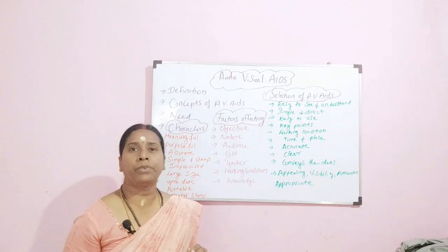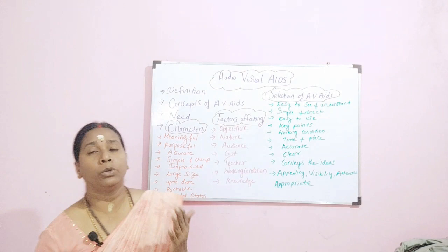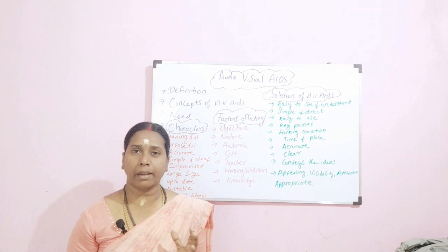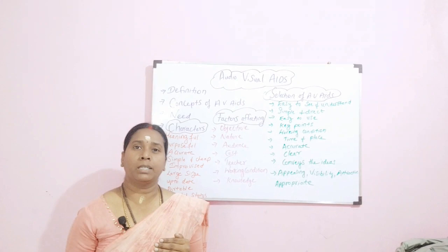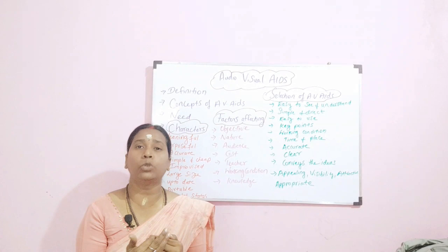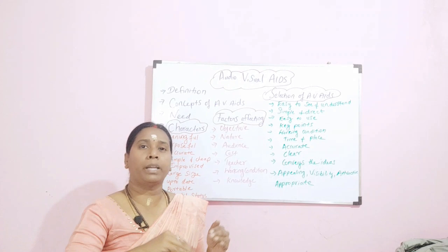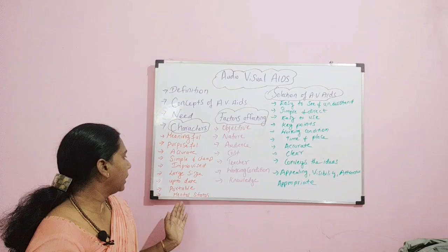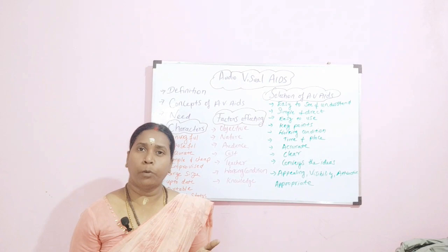Then comes updated information. It is not about using an AV-AIDS already prepared by somebody else. See for updated information — check journals, updated books. Every year, every 2 years, every 5 years, you will have updated information. Take that updated information and incorporate it in your AV-AIDS. It has to be a revised AV-AIDS, not using the same thing again and again.